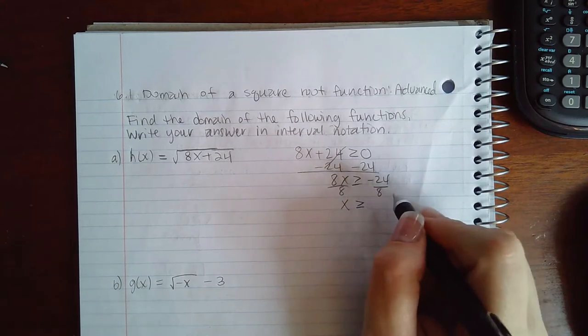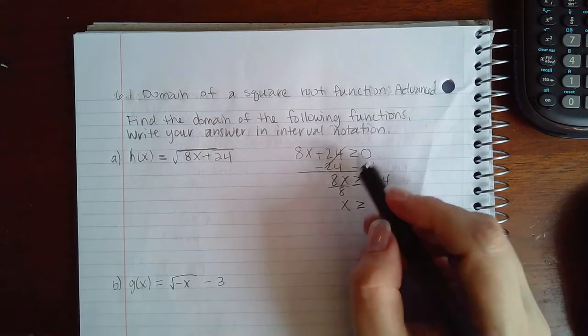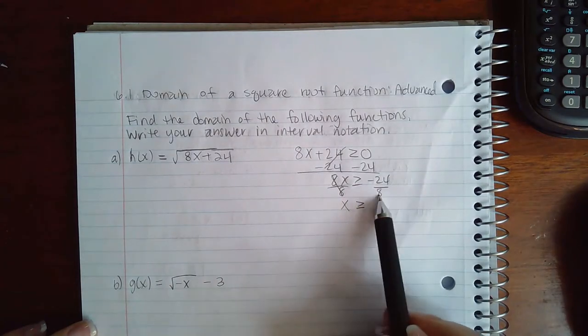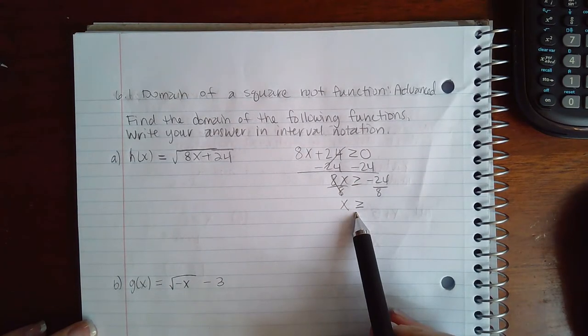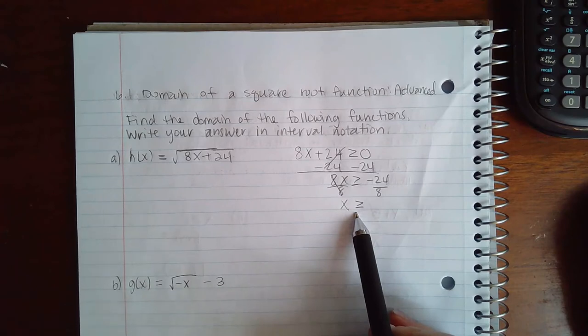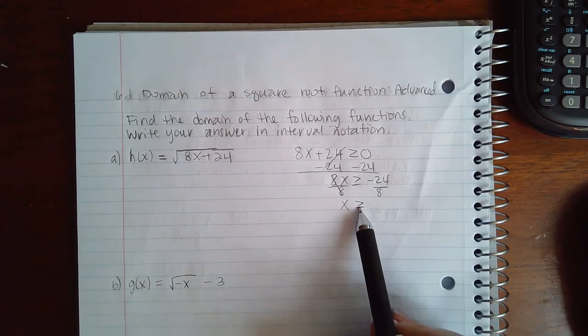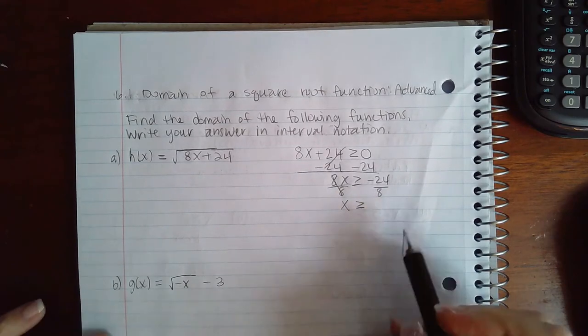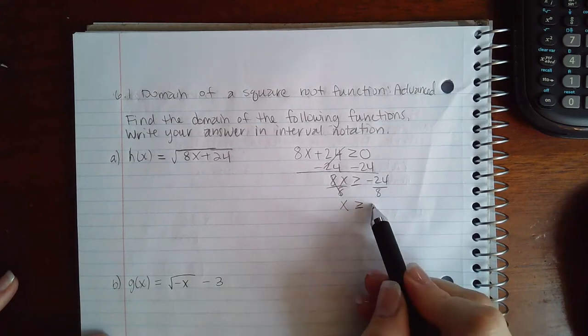When solving an inequality, it's very important that you understand something. If you divide by a positive number, this symbol will stay the same. If you divide by a negative number, this symbol will flip over. So since I divided by a positive 8, that means that this symbol is going to look exactly the same as it did.